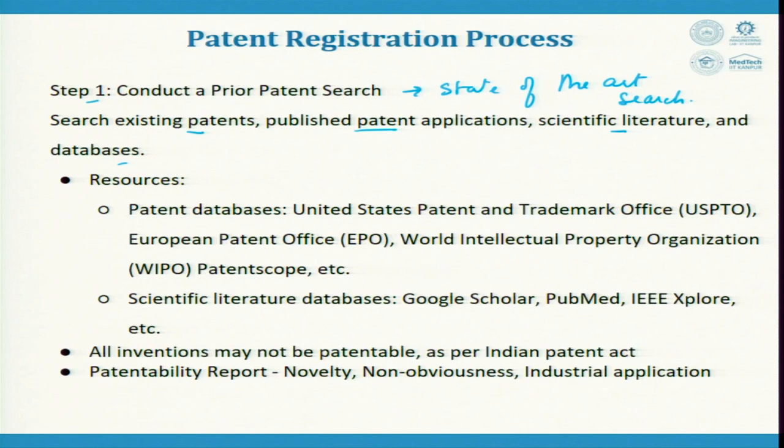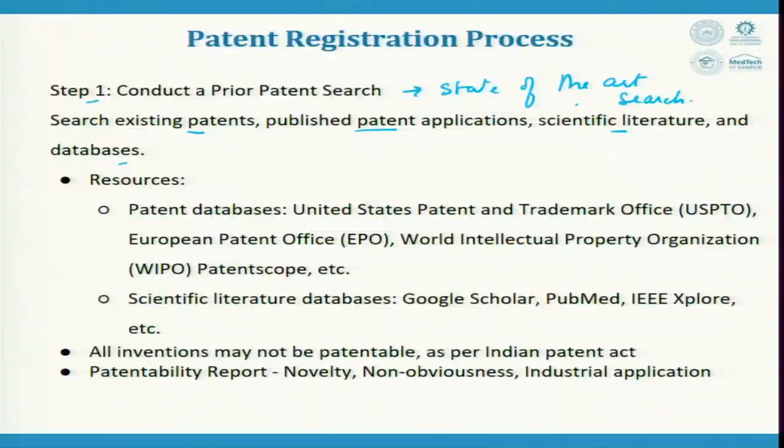What you do first is search for existing published patents. There are two ways: you look at things which are published and have expired — say, crossed 25 years or 75 years in some countries, which is also called open literature — and second, those which are within the 25-year window. So: existing patents, published patent applications, and scientific literature and databases.